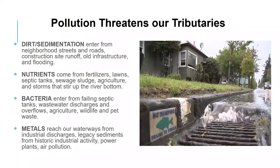What we see throughout the St. Johns River watershed, as well as tributaries throughout the state — and this isn't unique to our St. Johns — is too much dirt and sedimentation running into our tributaries from construction, nutrients from fertilizers, lawns, as well as septic tanks, sewage, sludge, agriculture, bacteria from those same sewage sources as well as wildlife and pet waste, and metals from industrial discharges. All of these pollution sources are important for us to focus on, but today, since we're talking about blue-green algae, we're going to focus on the human waste sources of tributary pollution.